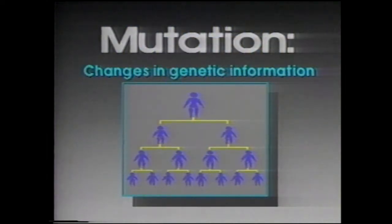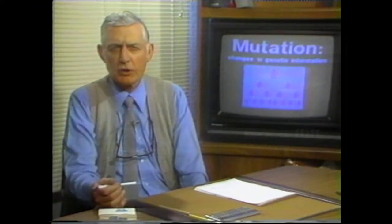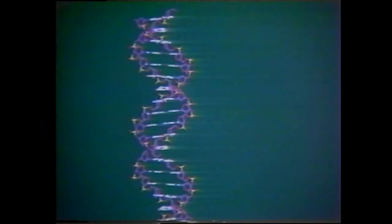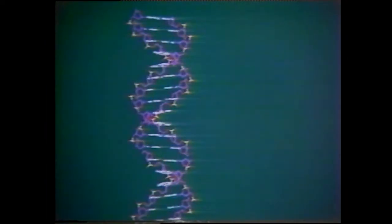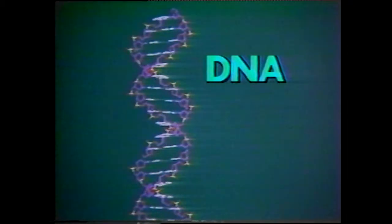Mutation is a change in genetic information that is transmitted either to descendants of the organism itself or to some later generation of cells in an organ. For the change to appear in a later generation, the effect must be in reproductive cells. If the change is in some other organ, it will appear only in cells of that organ derived from the cells in which the change occurred. The genetic information we're concerned about is carried on the very long molecules of DNA in each cell, which are replicated in cell division to assure that all cells of a kind are alike and function correctly.